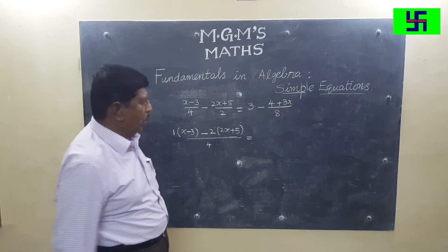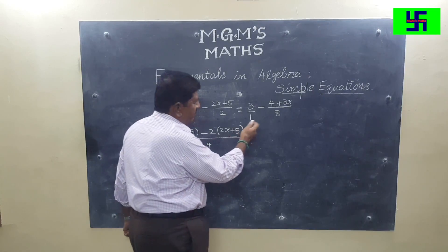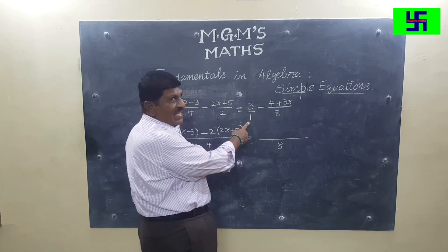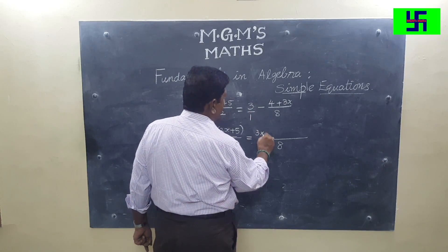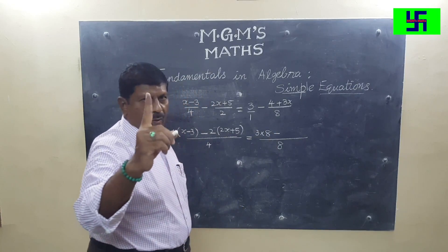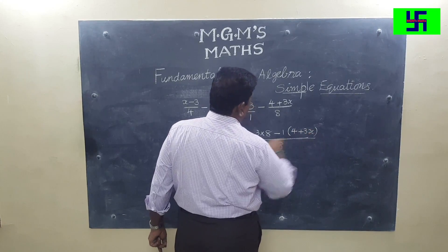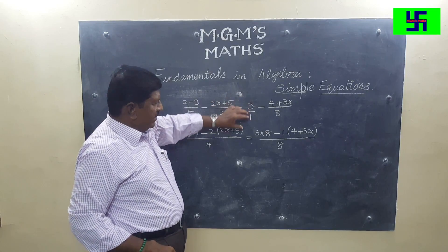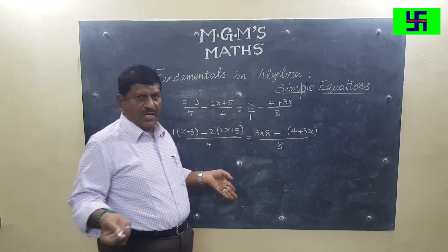Now, 3 remains ideal. It has no denominator, that is what we feel. No, it has a denominator 1. What is LCM for 1 and 8? We take 8. In 8, how many 1's are there? 8 ones are there. So 3 into 8 minus. In 8, how many 8's are there? Only 1. So 1 into 4 plus 3x. I suppose it is clear. Whenever a single digit comes, take it granted it has the denominator 1, so you will not have confusion at all.